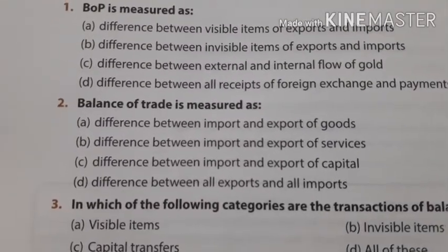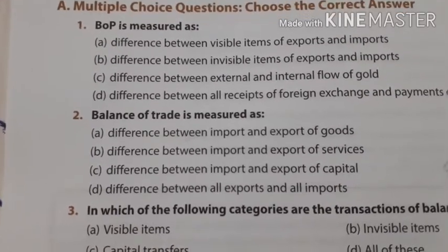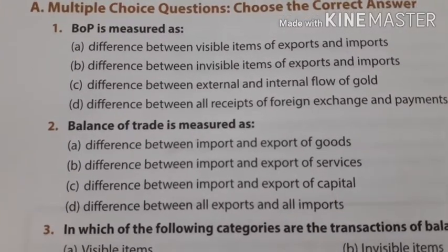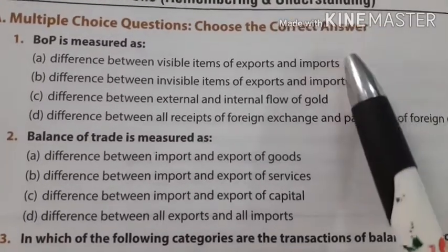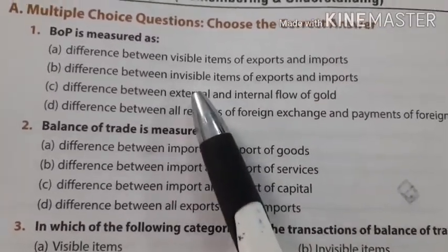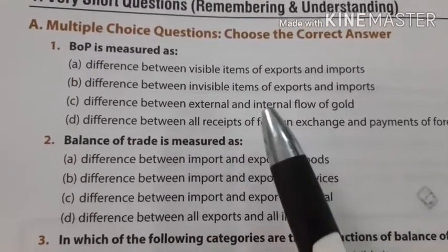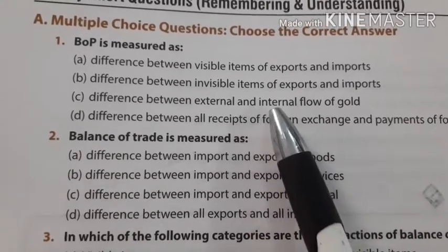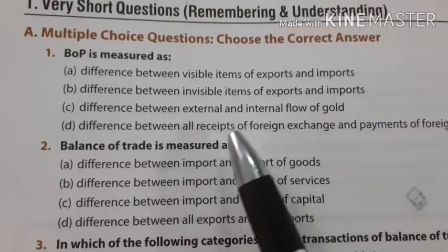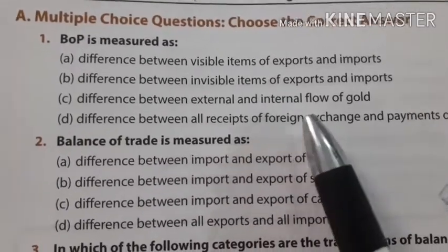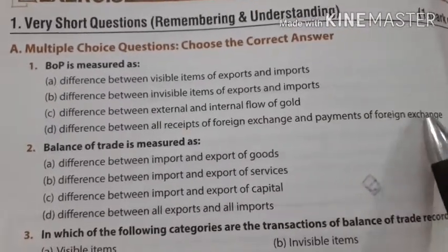Balance of payment is measured as: first, the difference between visible items of exports and imports; second, difference between invisible items of exports and imports; third, difference between external and internal flow of gold; fourth, difference between all receipts of foreign exchange and payment of foreign exchange.